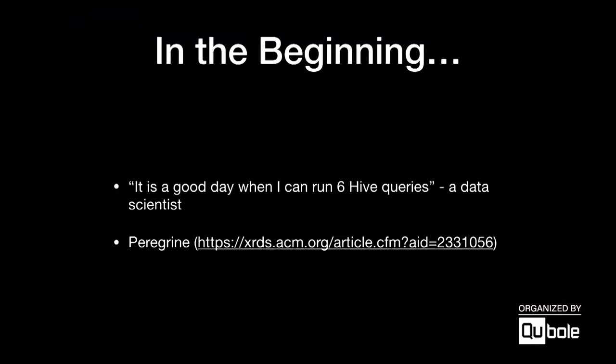Why did we start Presto? When we joined Facebook in 2012, Hive was the engine of choice. People used it for batch jobs and attempted to use it for analytics. There's a famous quote from a data analyst at Facebook who said they were happy if they could run six Hive queries in a single day — we found that very unacceptable. There was another system called Peregrine that attempted to solve interactive queries over the Hive warehouse, but it had limitations, wasn't being maintained, and the architecture wasn't extensible. So we decided to create something from scratch with a team of four engineers.